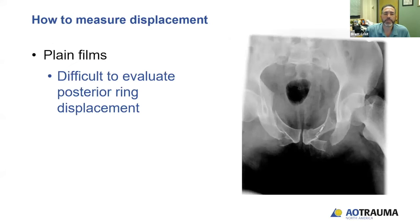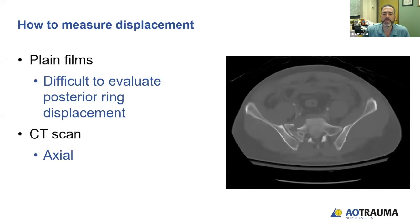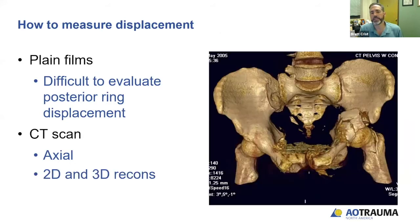So how do we measure displacement? Plain films can make it difficult to see posterior ring displacement, as you can see here on this right-sided sacral fracture. CT scans are obviously helpful — that's the same patient and you can see better visualization of the fracture pattern as well as displacement. And surface-rendered 3D reconstructions and 2D reconstructions can also be helpful.